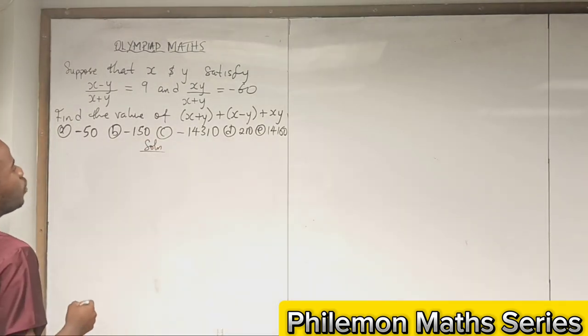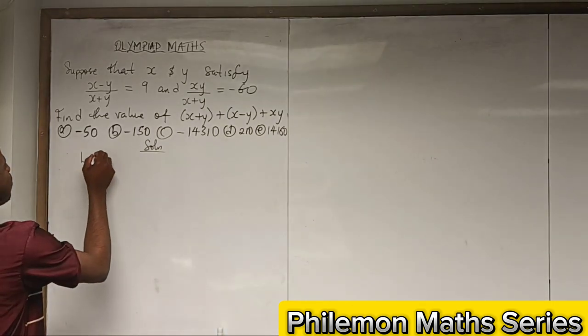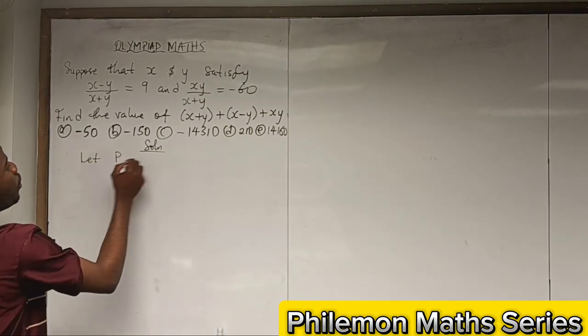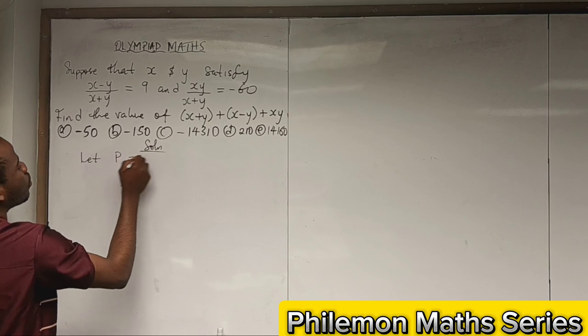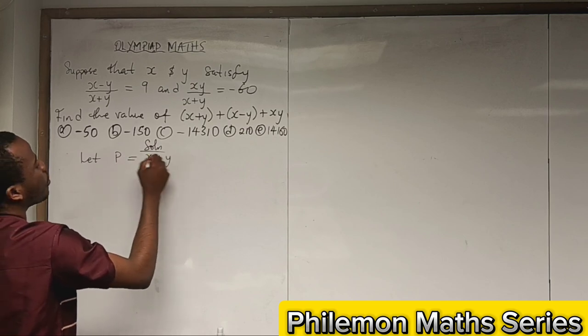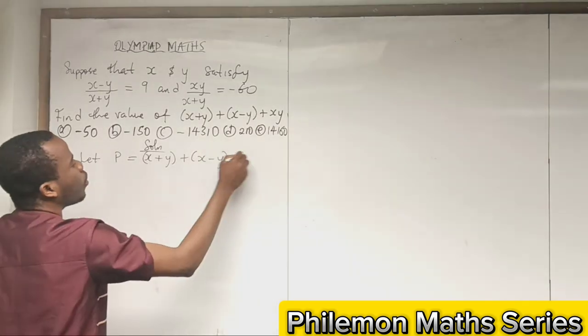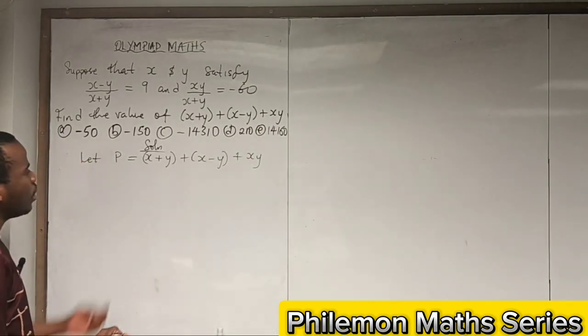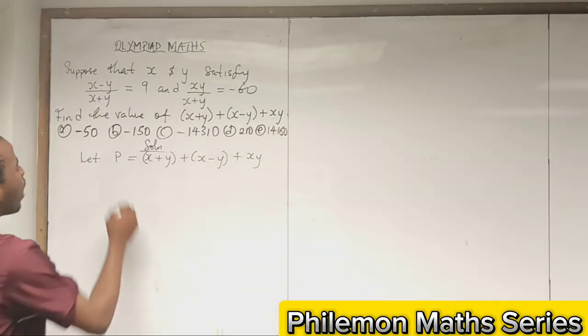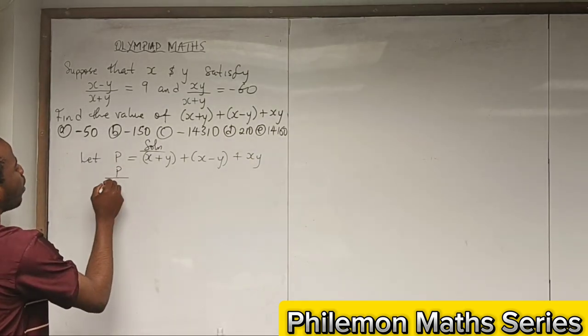The first thing we would like to do is let P equal (x + y) + (x - y) + xy. Let's divide through by (x + y).